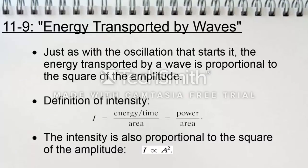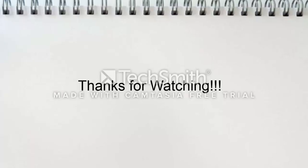Lastly, we have section 9, energy transported by waves. Just as with the oscillation that starts it, the energy transported by a wave is proportional to the square of the amplitude. Intensity is defined as energy over time divided by area, or power over area. And the intensity is also proportional to the square of the amplitude: I is proportional to A squared. Thank you for watching!